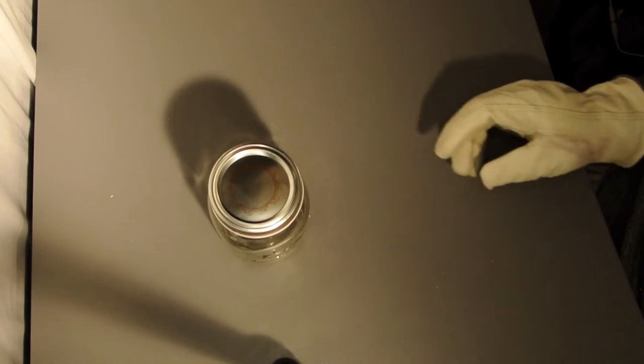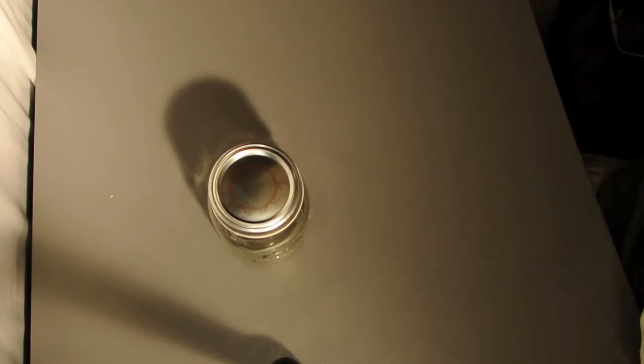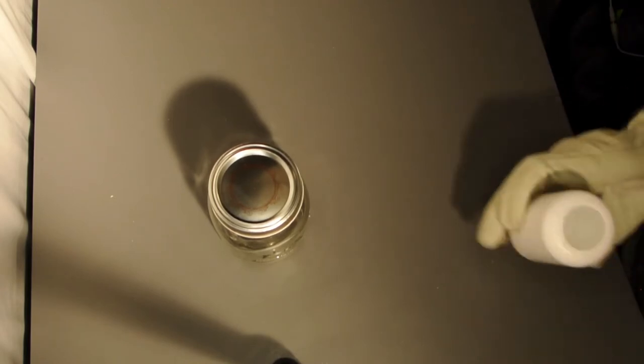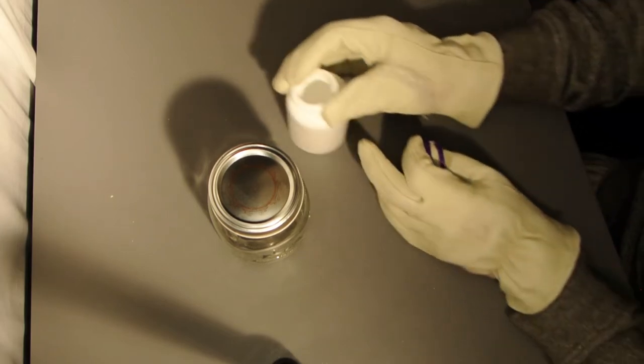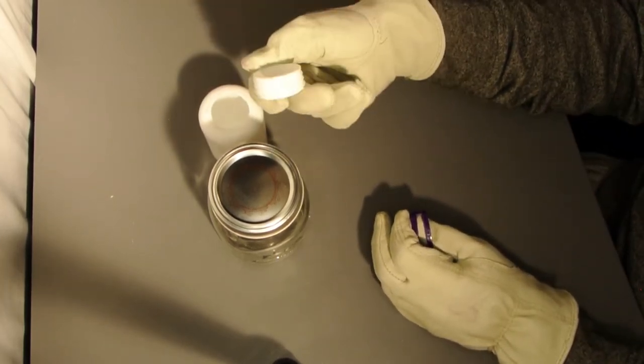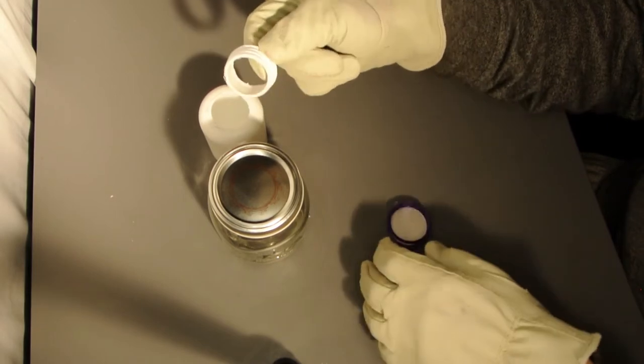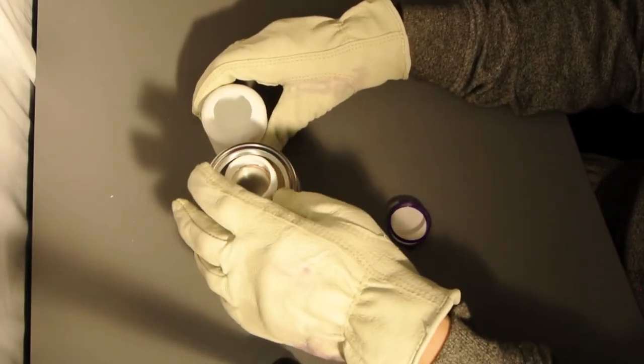Now we need to modify the lid of the mason jar. As you can see, I cut the neck part of the plastic bottle off. Now we need to put the bottle neck...